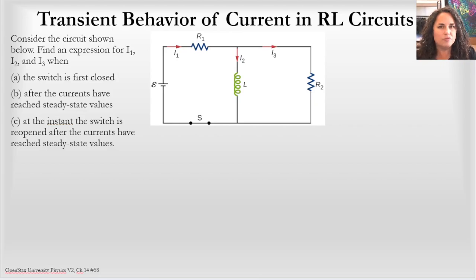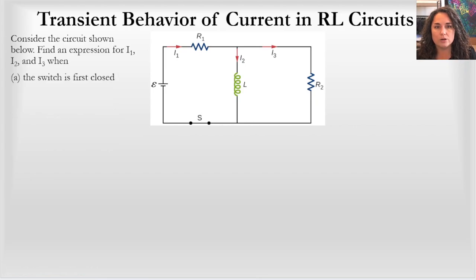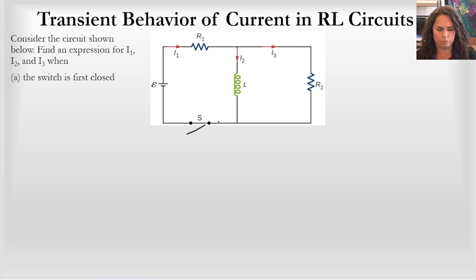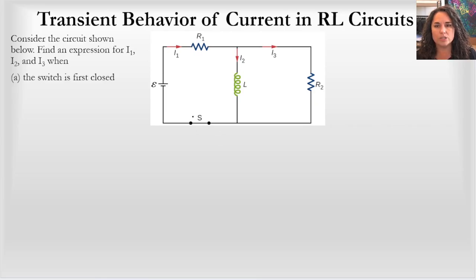Let's focus on part A first — when the switch is first closed. We're going to imagine that initially the switch was open and all of the currents were zero before. The battery is not able to deliver current to any of these branches if the switch is open. So when the switch gets closed, we remember that the current before was zero.